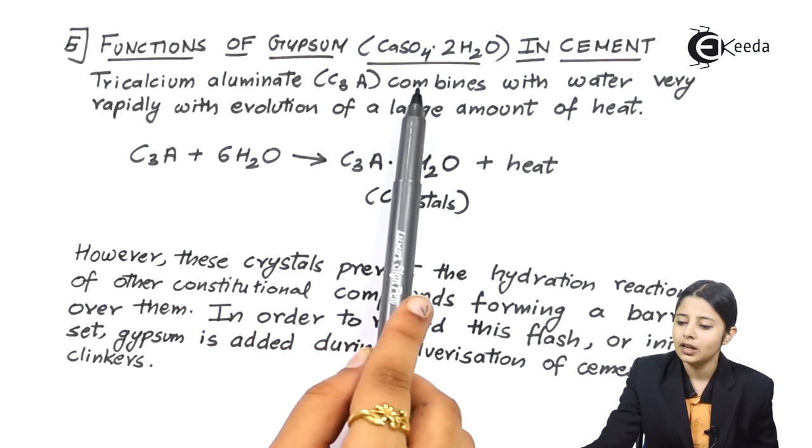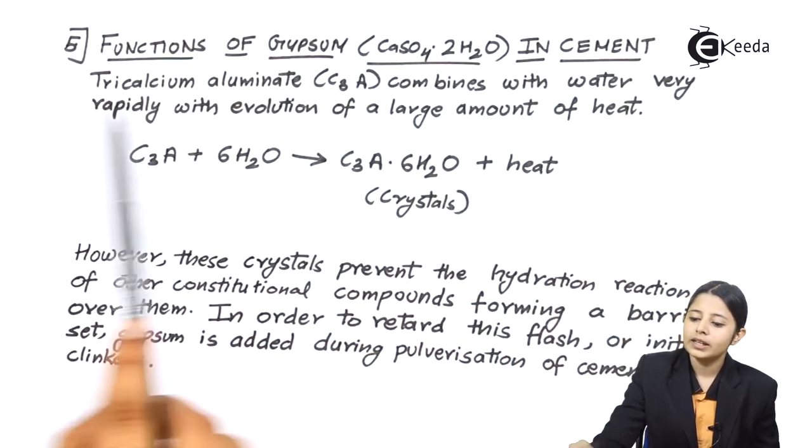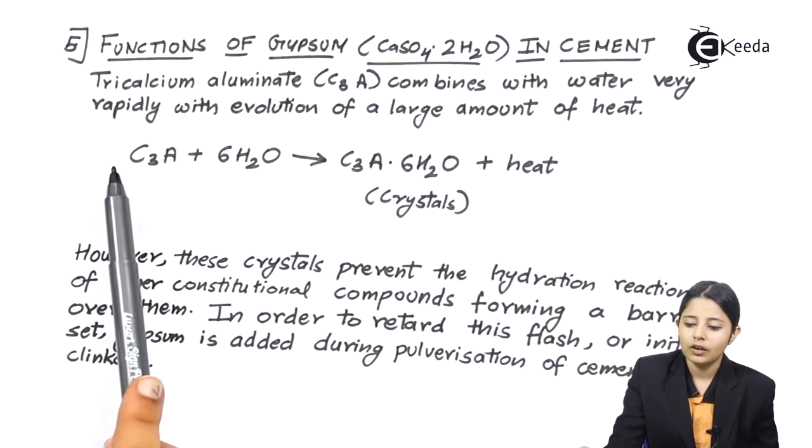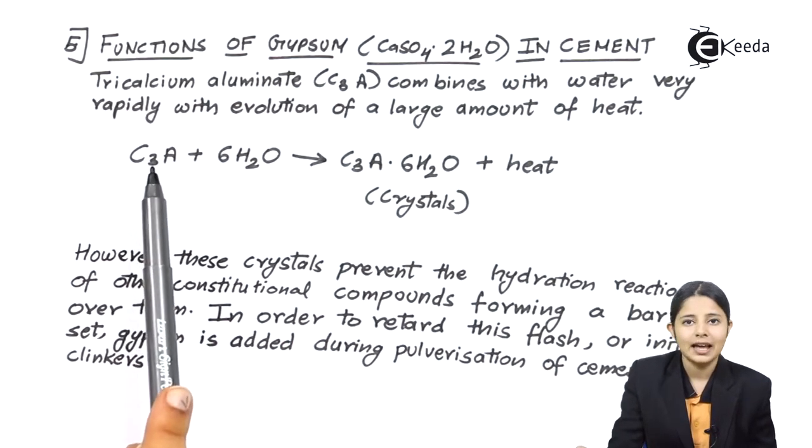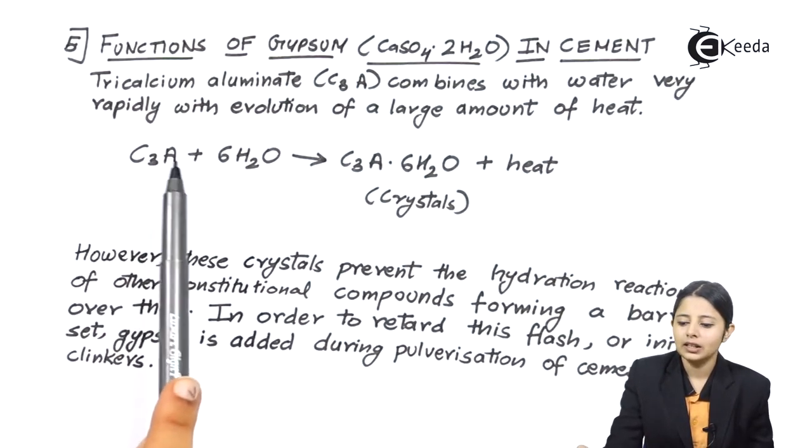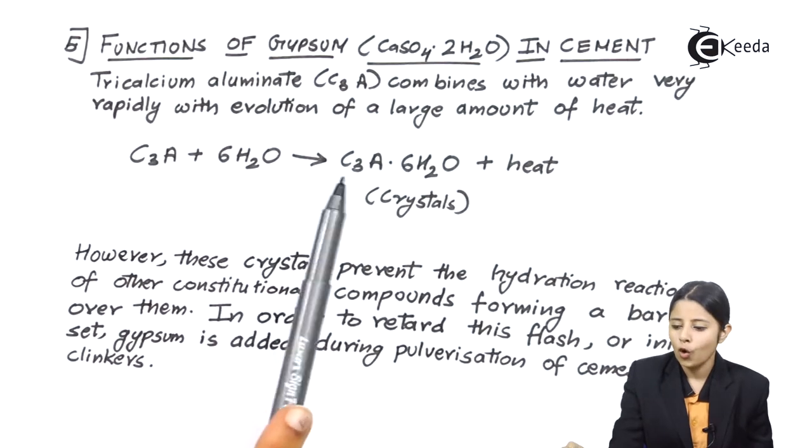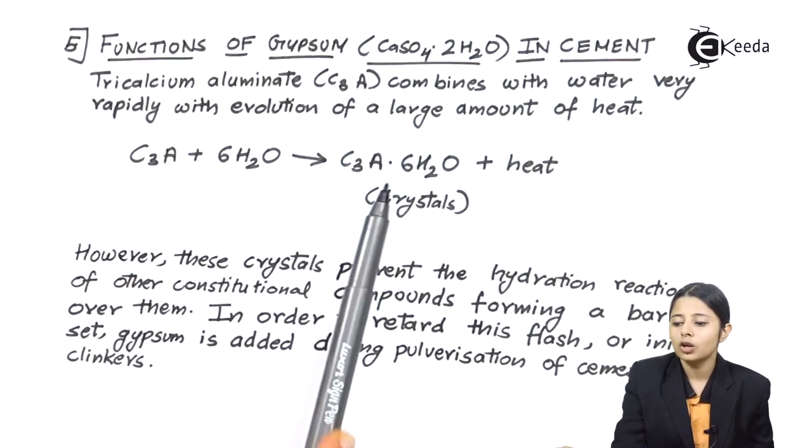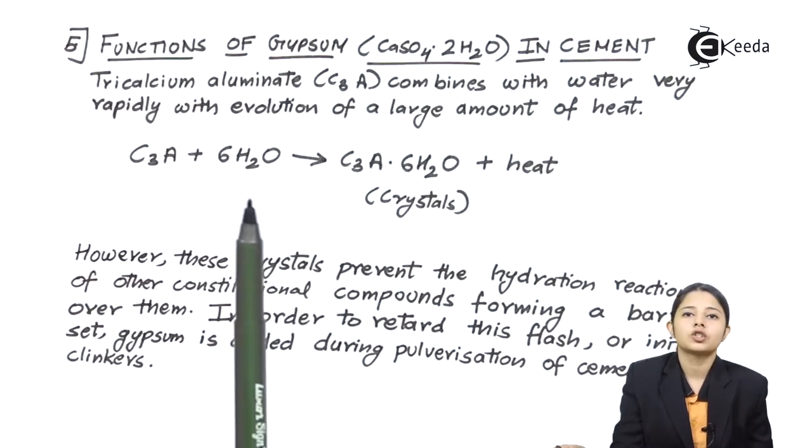So now what does gypsum exactly do? Tricalcium Aluminate C3A combines with water very rapidly with evolution of a large amount of heat. So now I have tricalcium Aluminate. Again Aluminate is written as A. You can also write it as AL.